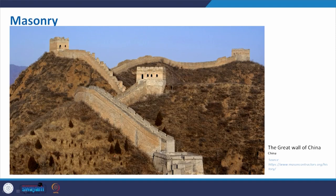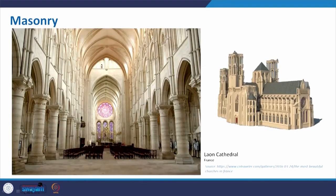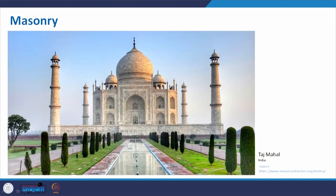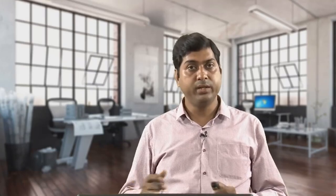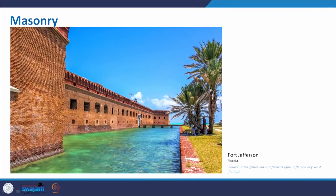Examples of masonry include the Great Wall of China, historical cathedrals, and stone masonry structures from India. Fort Jefferson also demonstrates the use of brick masonry with mortar. These were used regularly when reinforcement and other modern materials were not yet available.